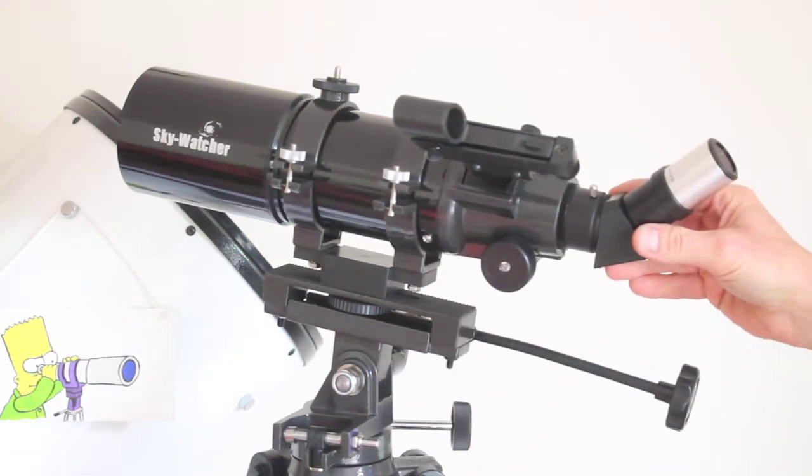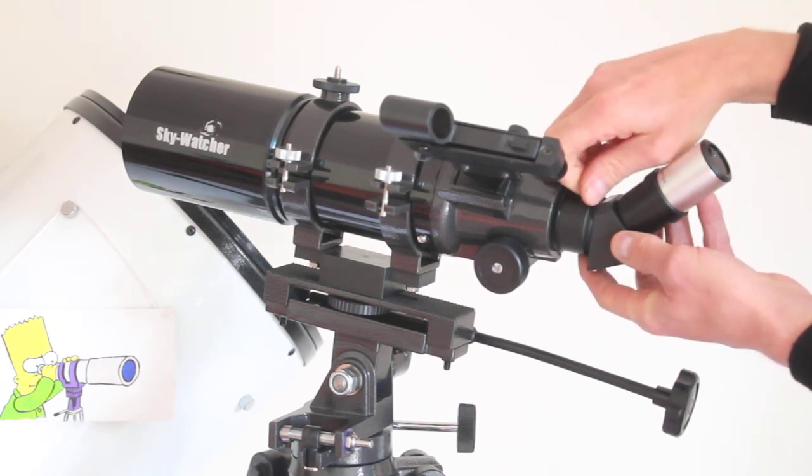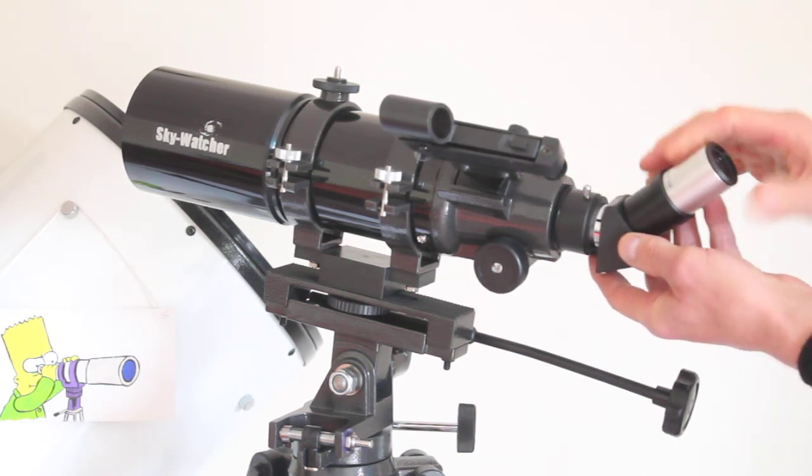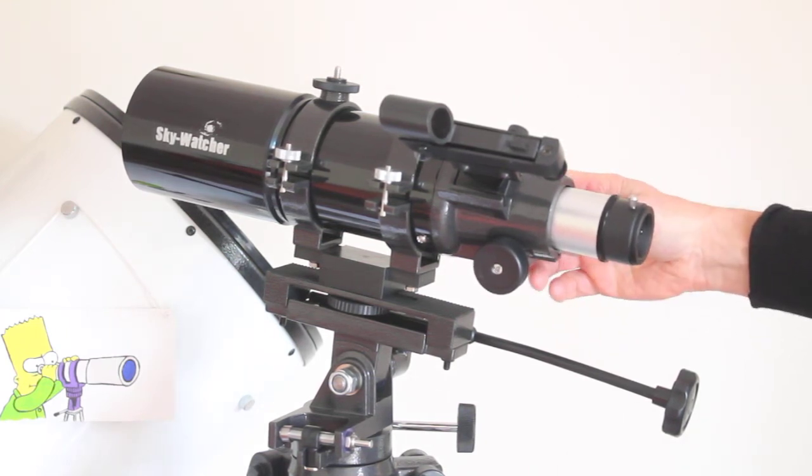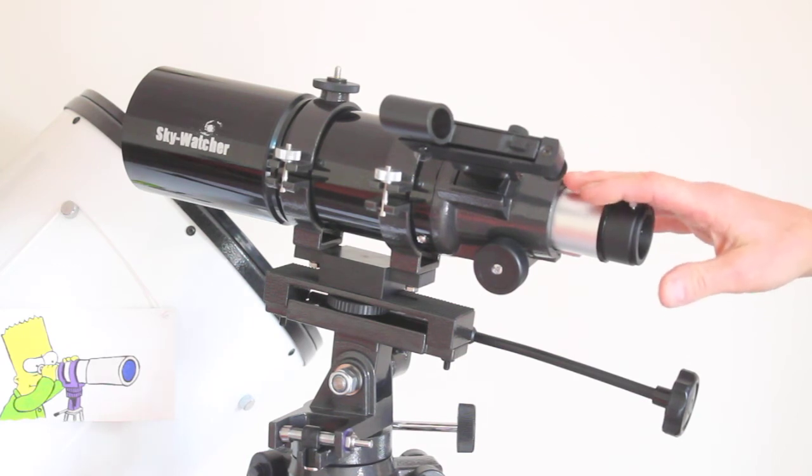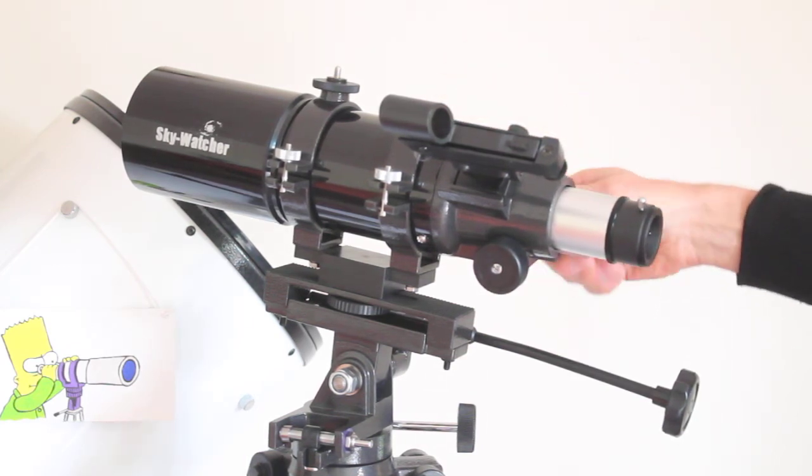Another thing people like to use this for is prime focus photography. By prime focus, I mean without the diagonal and without the eyepiece, because for imaging with astronomy, you want the light to go through as little glass as possible. It has a T-thread already there on the focuser, so you don't have to buy another adapter.